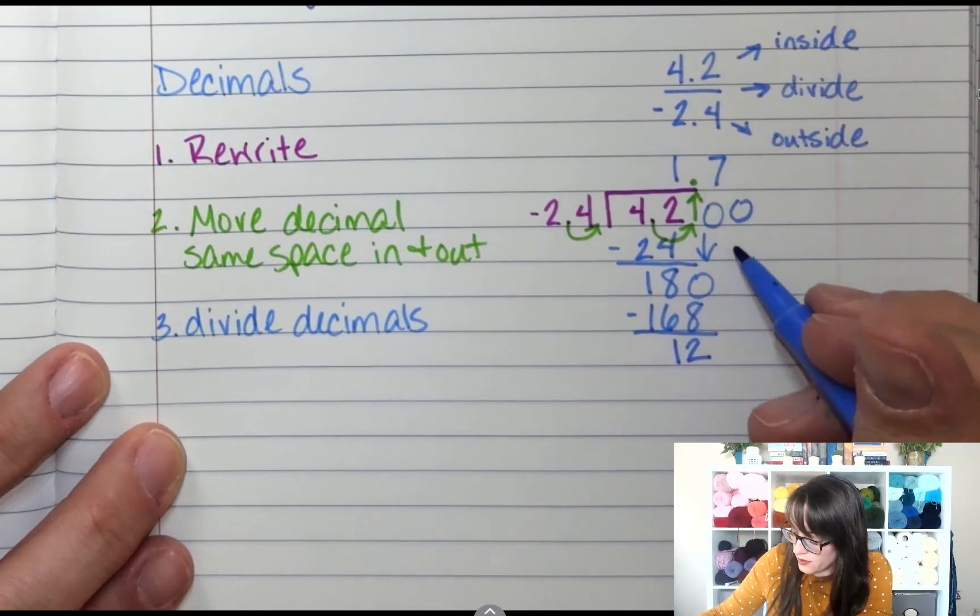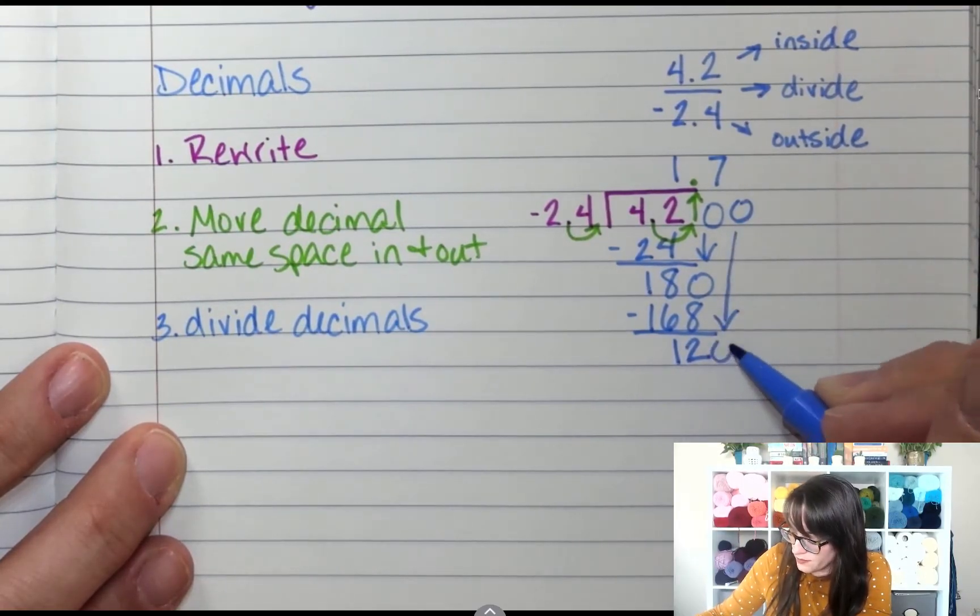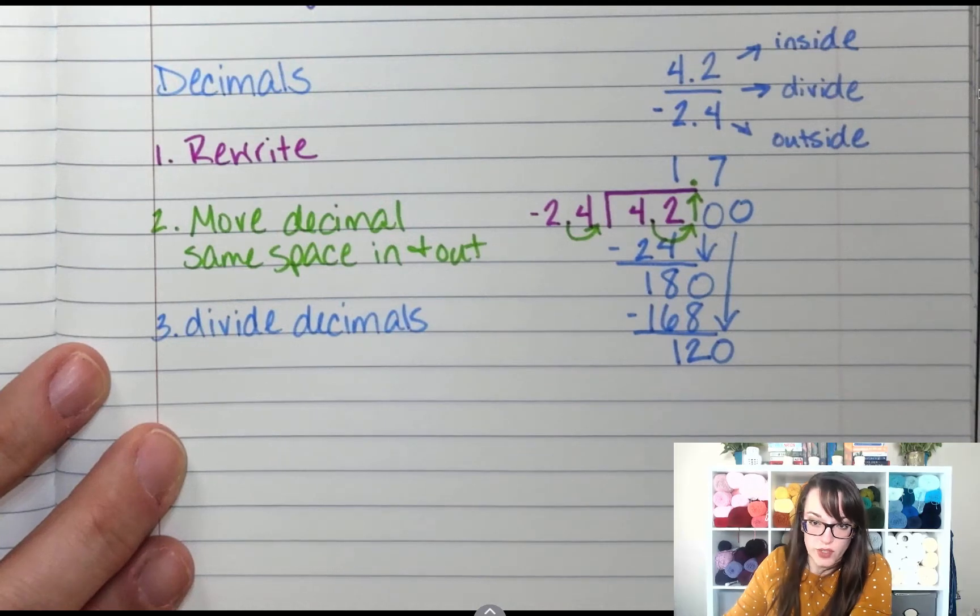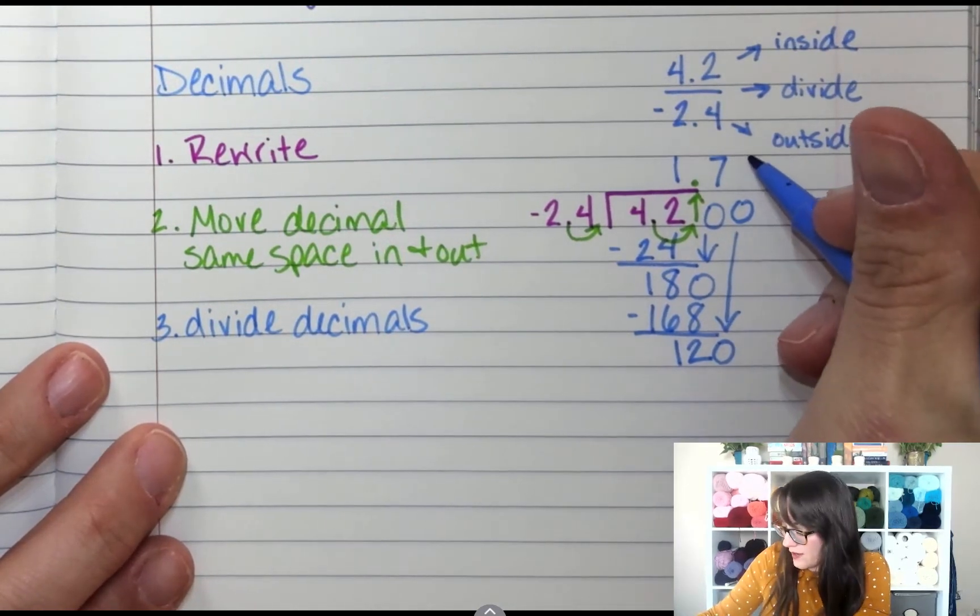Add another 0, bring it down. How many times can 24 go into 120? 5 times.